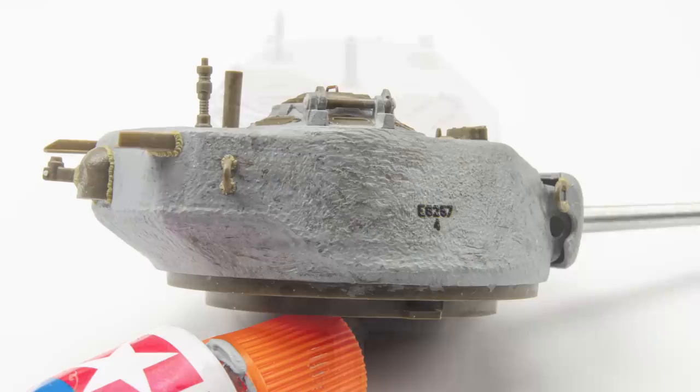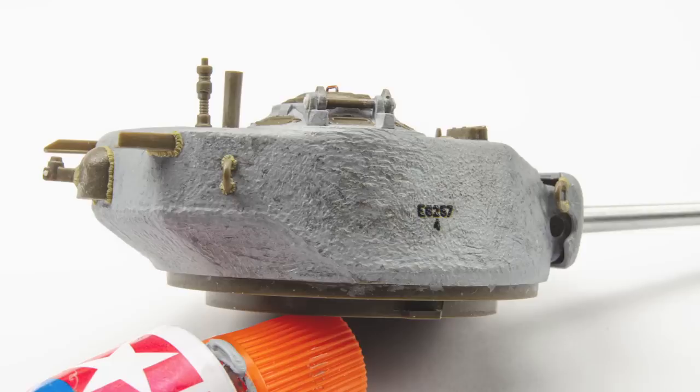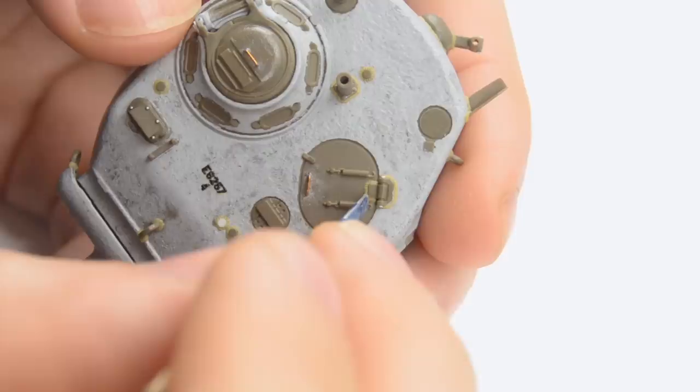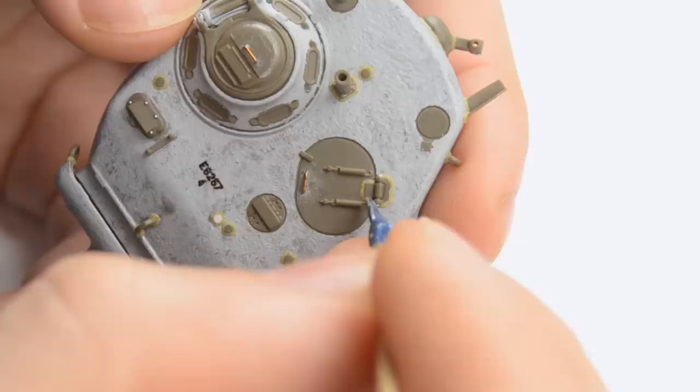Of course, what you're seeing on these photos is the turret without any paint, but I added a few more details to it, which weren't exactly the main focus of this video, namely the weld beads around several components, and these were again made from Tamiya epoxy putty the usual way, and again, there's a video link in the description for that.